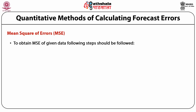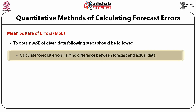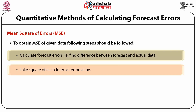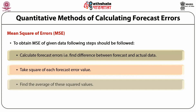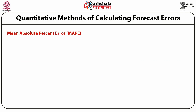Mean Square of Errors (MSE): to obtain MSE of given data, following steps should be followed. Step 1: calculate forecast errors, i.e., find the difference between forecast and actual data. Step 2: take the square of each forecast error value. Step 3: find the average of these squared values.